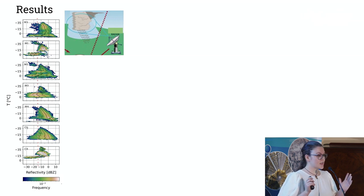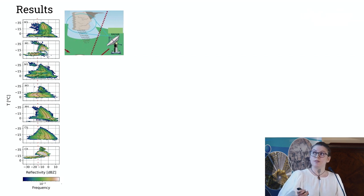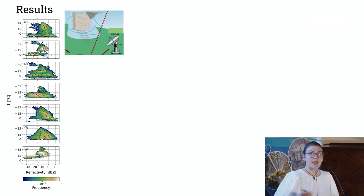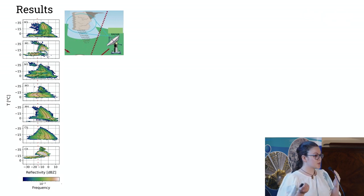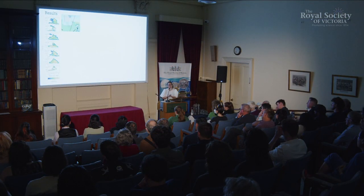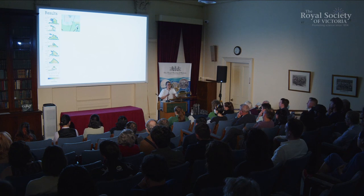Here I'm summarizing the cloud features found for each of the seven synoptic patterns. To simplify: whatever is to the left of the pink line are non-precipitating clouds, and whatever is to the right are precipitating clouds. I show this by temperature — the colder the clouds, the higher they are, and the warmer, the lower. We found that clouds present different features depending on the synoptic pattern.